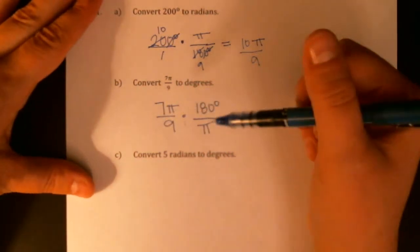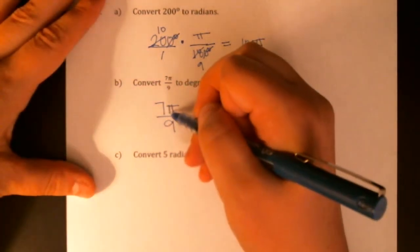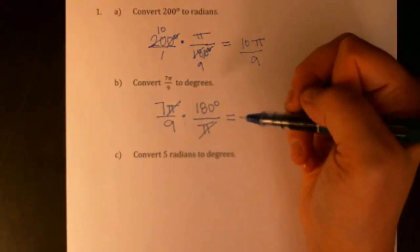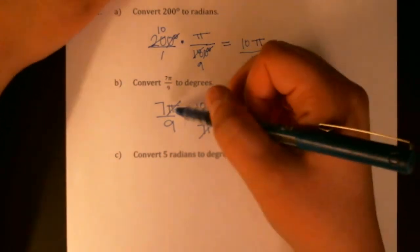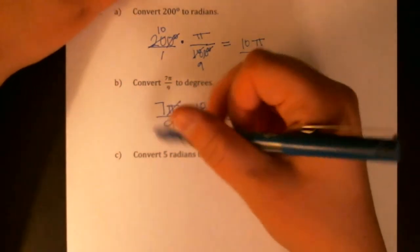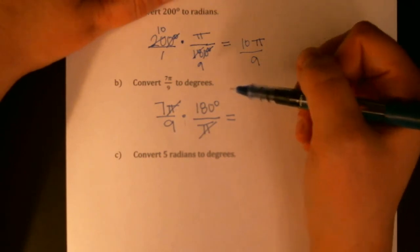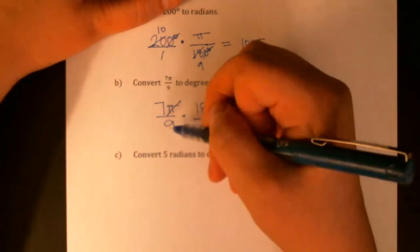So by multiplying by 1 we change the units of this angle 7π over 9 without actually changing the size of the angle, which is really key. So the π's cancel, which again is convenient, but make sure you're not thinking about that as the radians canceling. That's not true. That's just part of this number here. Radians are unitless, and then we've introduced the degrees, which is great.